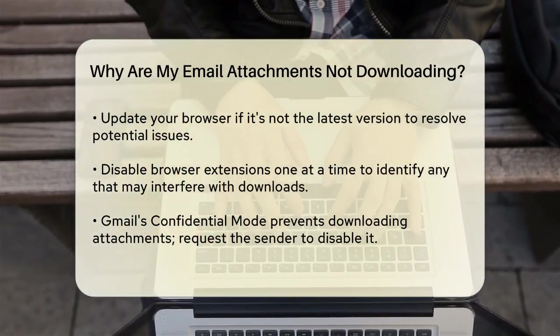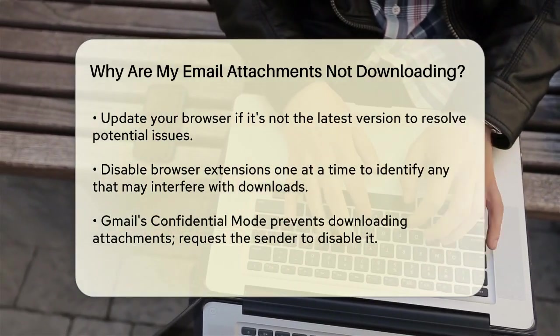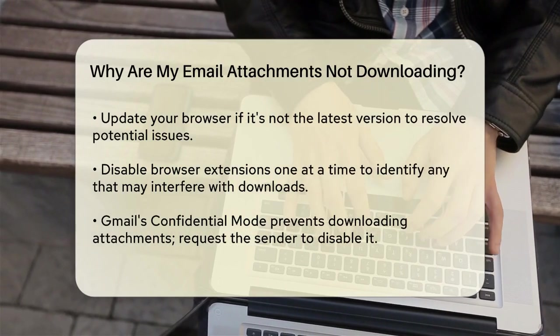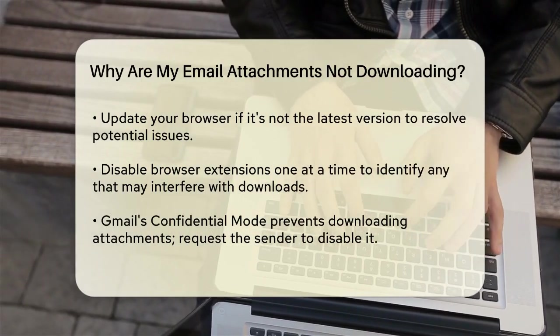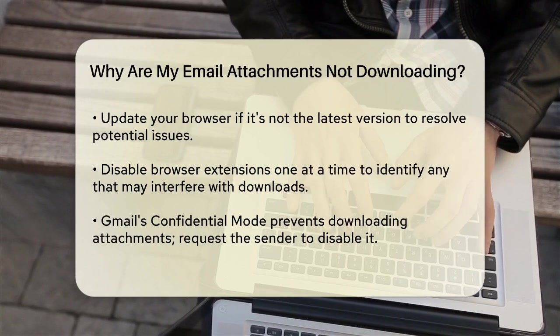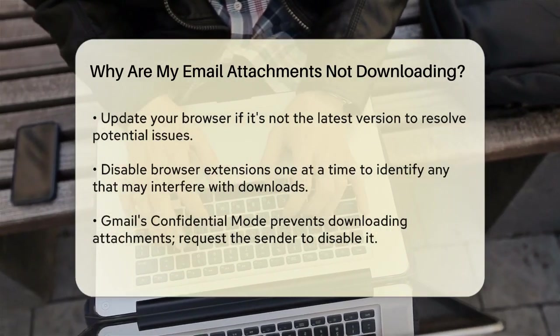If the sender has sent the attachment with Gmail's confidential mode enabled, you won't be able to download, print, or save the attachment. You'll need to ask the sender to remove confidential mode to access the file.